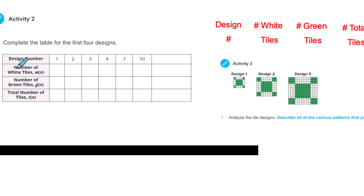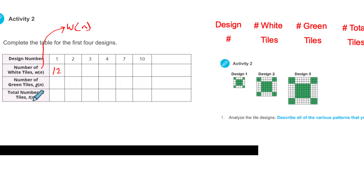Design number one: the number of white tiles. We're going to use function notation — W of N. That's function notation. It's telling us we're going to plug an N in, which tells us the design number, and then it will tell us the number of white tiles. In the first design, there are three times four, so there are 12 white tiles. The number of green tiles: we have three by three, so that's nine in the middle, plus four — that's 13. The total number of tiles: the dimensions are five by five, that's 25. Or we can just add the white and green together to get the total.